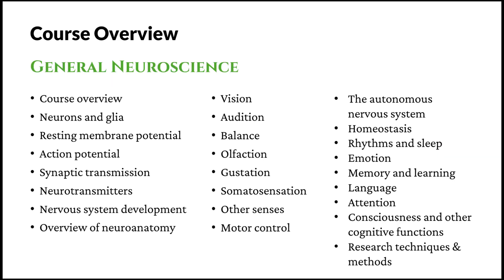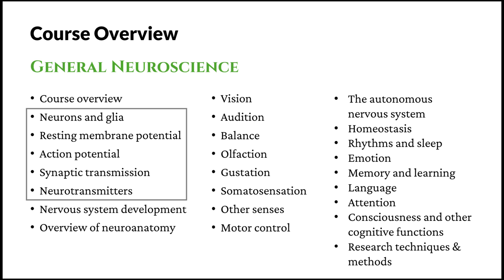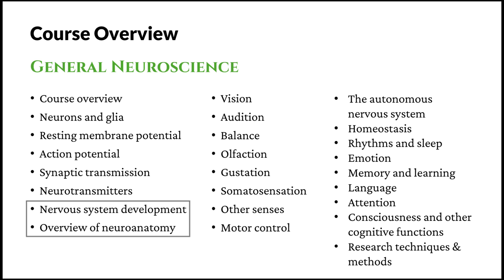In this course, we're first going to have an overview of general neuroscience. This includes the course overview in this episode, and then we're going to dive into the world of cells. We will learn what are neurons and glia, then take a look at membrane potentials including resting membrane potential and action potential, synaptic transmission, and the role of neurotransmitters. After that, we will look at the development of the nervous system and then have an overview of neuroanatomy.